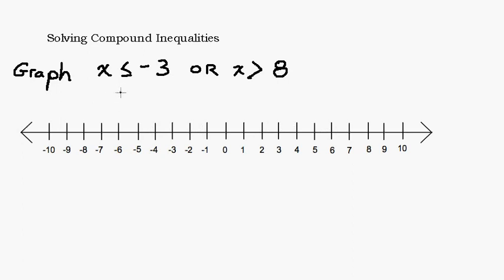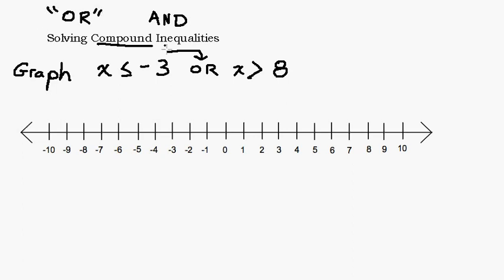Here's my first example. We're going to graph the solutions that would make this true: x is less than or equal to negative 3, or x is greater than 8. What makes this a compound inequality is the fact that the word 'or' is present. For a compound inequality, the two words you'll be looking for are 'or' and 'and.' Here, x is less than or equal to negative 3 is one inequality, and x is greater than 8 is another. The 'or' in between makes it a compound inequality.